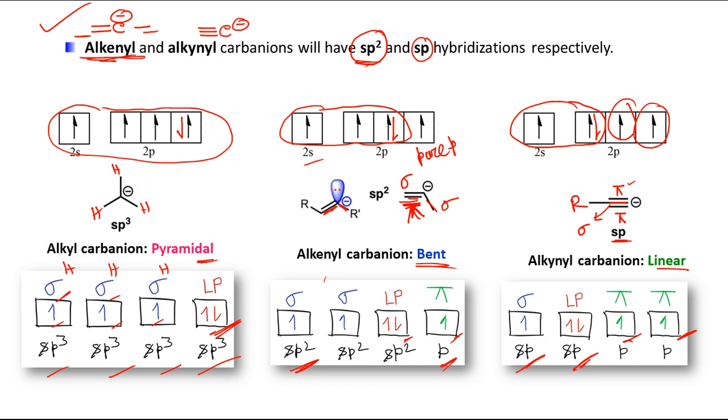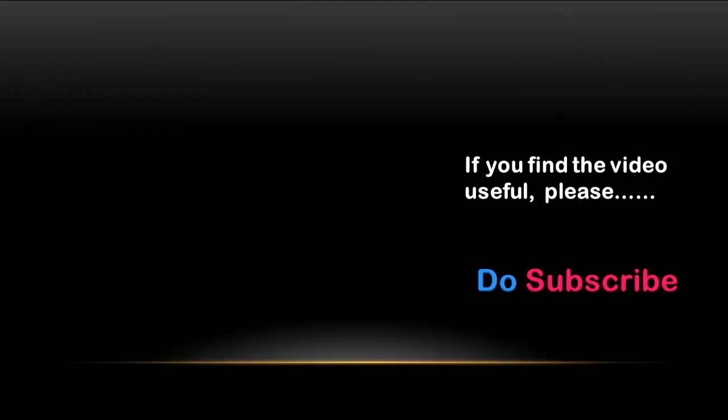In this way we can explain the hybridization and geometry for alkyl, alkenyl, and alkynyl carbanions. I hope you now have a clear idea about hybridization and geometry for carbanion intermediates. That's all for this video — thank you for listening.